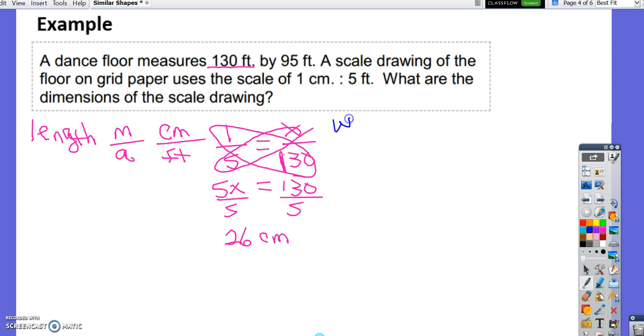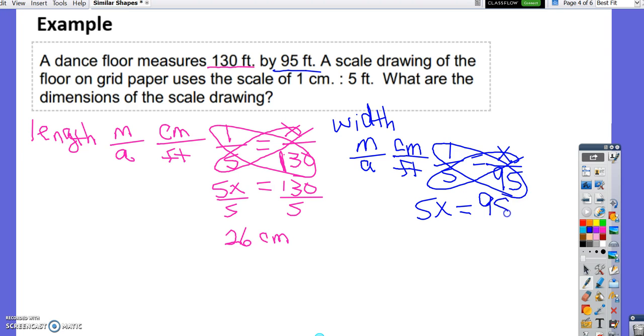Then we need to do the width. We have model over actual, centimeters over feet, 1 over 5, and x over 95. We solve our proportion. 5x equals 95. Divide both sides by 5. You get x is equal to 19 centimeters. So what are the dimensions of the scale drawing? 26 centimeters by 19 centimeters.